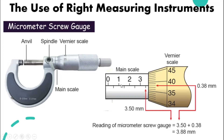On the main scale we have 0.5, 1, 1.5, 2, 2.5, and so on. We take a look at where the vernier scale lands — it is just a little bit after 3.5, so we take the main scale reading as 3.50 mm. For the vernier scale, we look for the line that becomes a straight line with the main scale. Here we have 35, 36, 37, 38 — and 38 makes a straight line with the main scale, so the reading is 0.38 mm. Adding them up: 3.50 plus 0.38 gives a final reading of 3.88 mm.